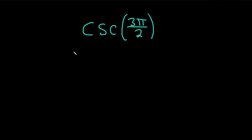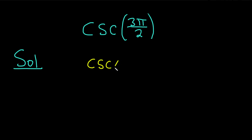In this video, we're going to look at the cosecant of 3π/2. The cosecant of x is equal to 1 over the sine of x.